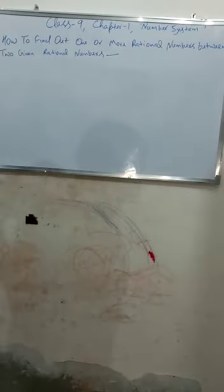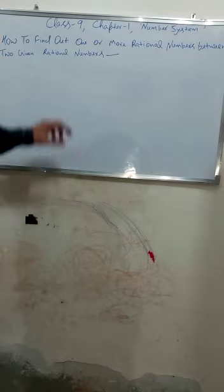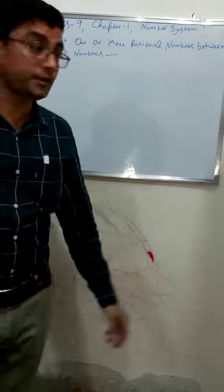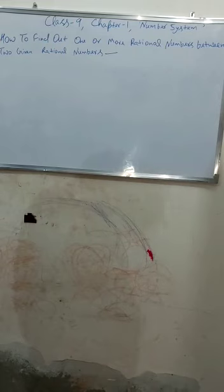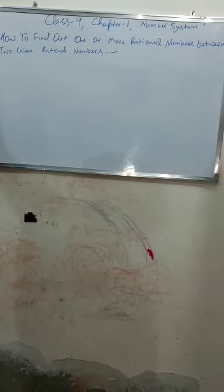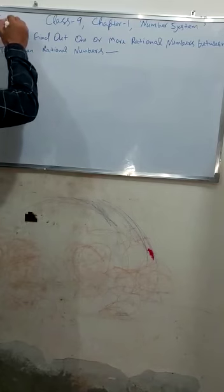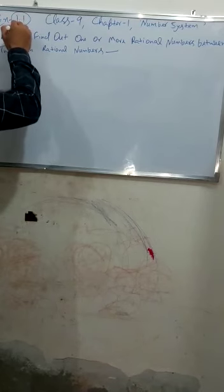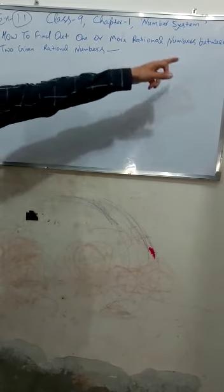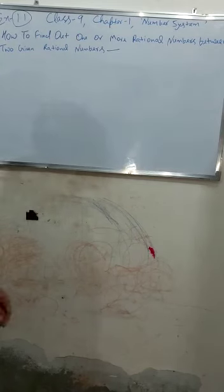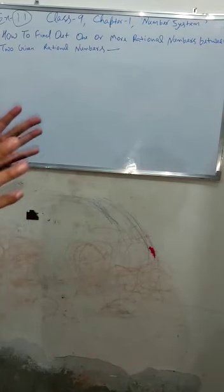Good morning everyone. Today we are going to discuss Chapter 1 from Class 9th Number System. As we have already discussed the basic things in the last video, this is my second video regarding Exercise 1.1. How to find out one or more rational numbers between two given rational numbers. There are a number of methods and we will discuss them one by one.